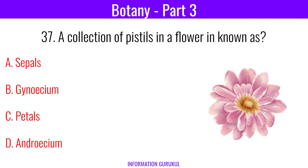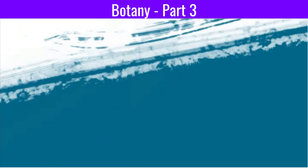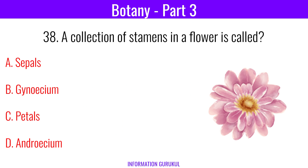A collection of pistils in a flower is known as? Gynoecium. A collection of stamens in a flower is called? Androecium.